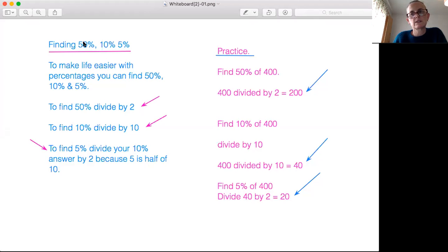We will look at the 75, 25 a little bit later but let's get the method clear in our heads today and that method will be finding 50%, 10% and 5%. To make life easier with percentages you can find 50%, 10% and 5%.